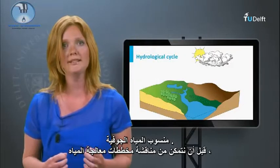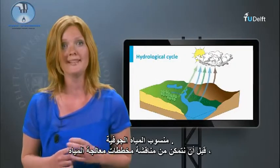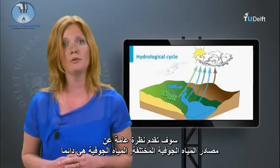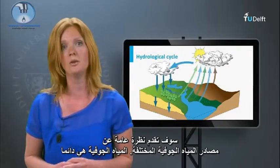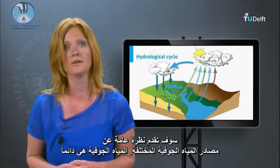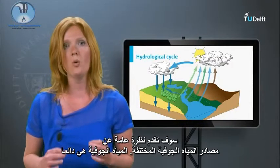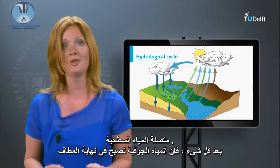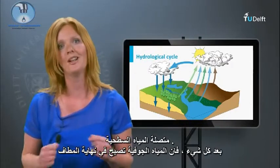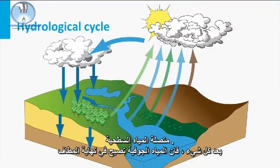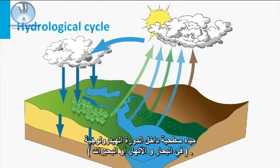Before we can discuss water treatment schemes, I will provide a short overview of different groundwater sources. Groundwater is always connected to surface water. After all, groundwater eventually becomes surface water within the hydrological cycle in seas, lakes, or rivers.